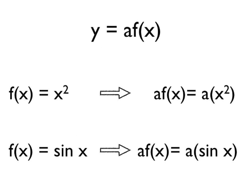We're going to be looking at two functions of x in particular. The first function of x is x squared. So if we do the transformation a times f of x on that, we'll be looking at the function a times x squared. The x squared is in brackets to clearly show that we do the x squared calculation first, and then we multiply it by a.